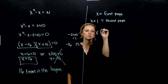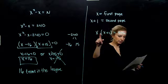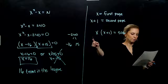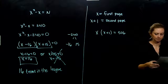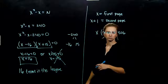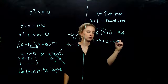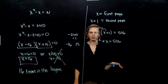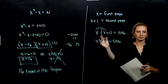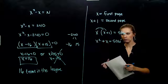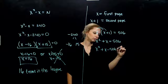Distributing: x squared + x = 506. Move 506 to the left since x squared is already positive. Subtracting 506 from both sides: x squared + x − 506 = 0. We need to break negative 506 into factors that multiply to negative 506 and add to positive 1 — meaning the factors are close together.